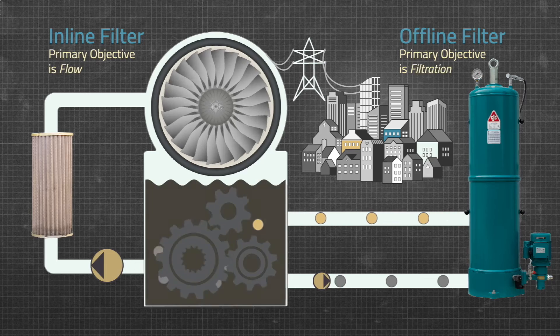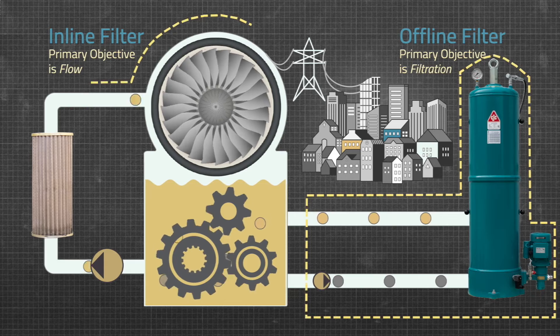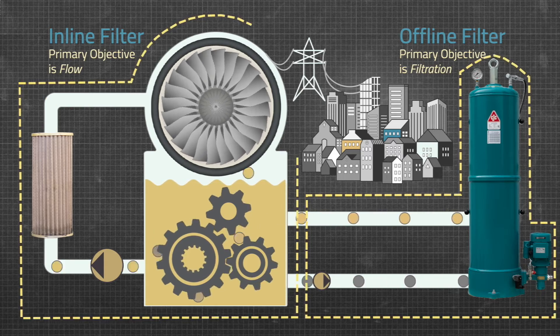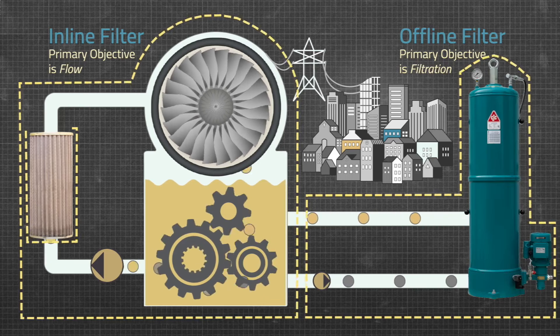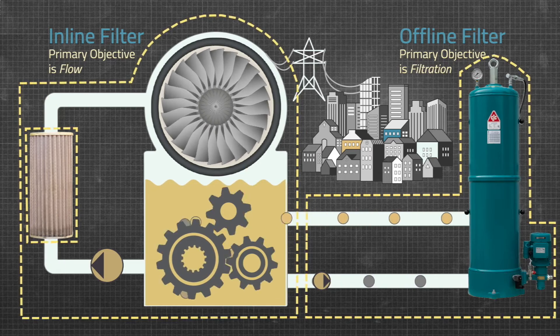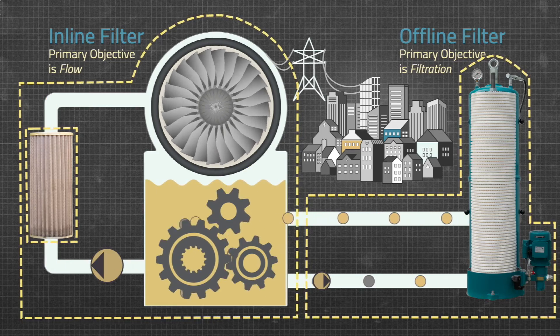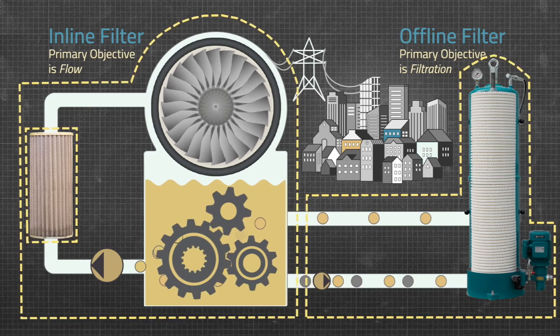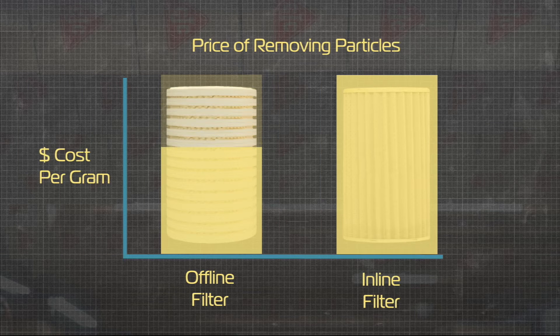There are a number of features and benefits inherent to an offline filtration system. Offline filters can be installed and maintained without disruption to the main system. Offline filters do not affect main system flow or pressure. Offline filters improve the lifespan of inline filters. Offline filters can use far denser media, resulting in finer filtration and higher holding capacity. Ultimately, offline filters can remove contaminants at a cost per gram in the neighborhood of one-tenth that of inline filters.